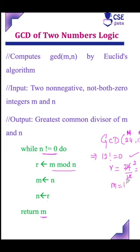n value is assigned to m, 12. And n value will be r value. r value is 0 now.